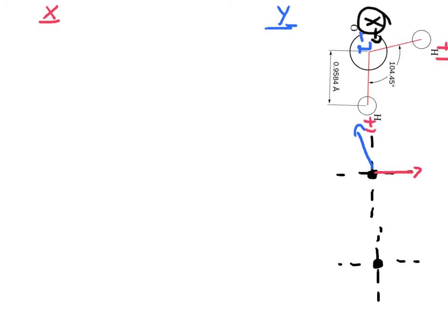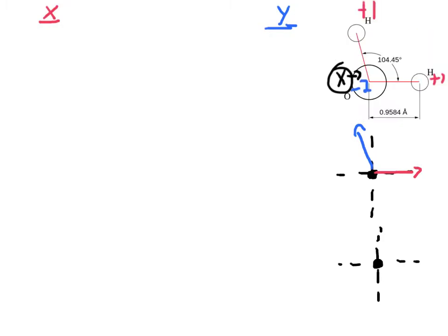I can adjust this oxygen atom however I would like, but it's very wise to pick a spot that will line up easily along the axis. I'm going to pick it so that if I draw an x-y axis on my oxygen atom, one of these forces now goes directly along the x-axis and the other goes up at an angle. The angle is 104.5 degrees — that's the angle between the two hydrogens in a bent molecule like this.